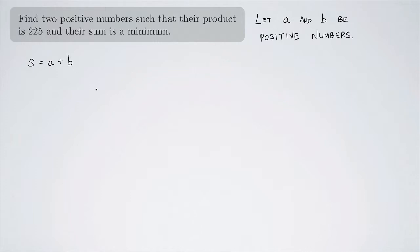Now, when you're doing an optimization problem, it's a good idea to write the thing that you want to maximize or minimize in terms of just one variable. Right now I have an A and a B. But I also know that their product is 225. That means that A times B is 225.